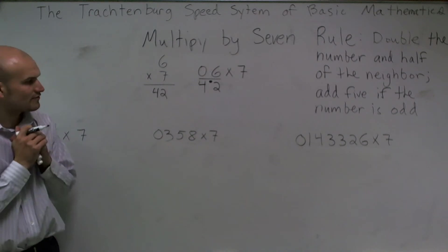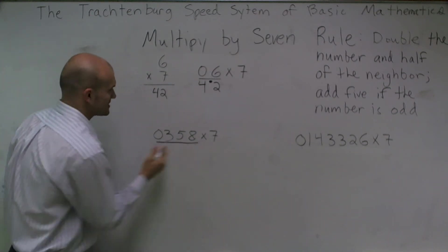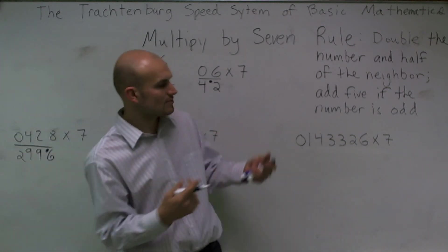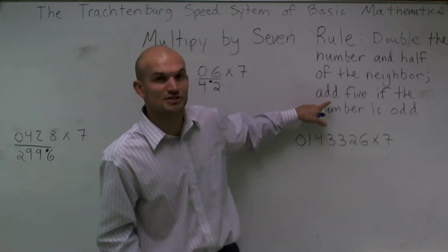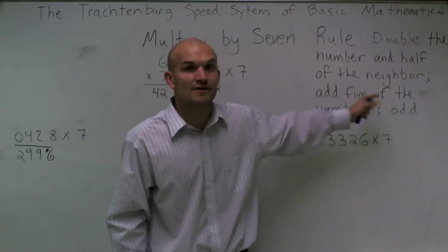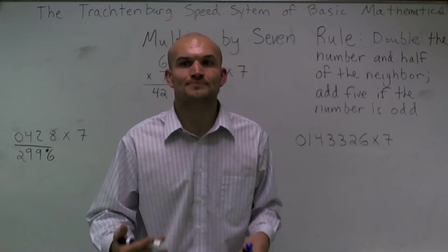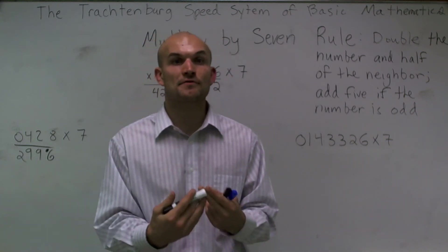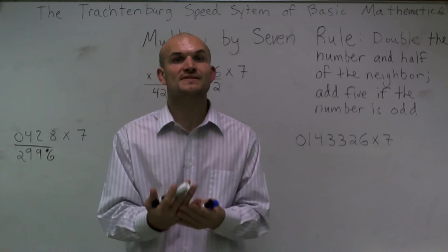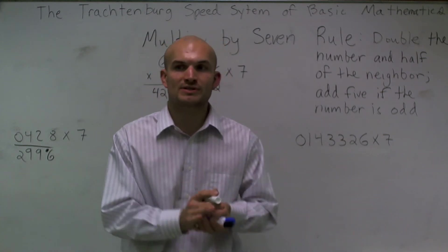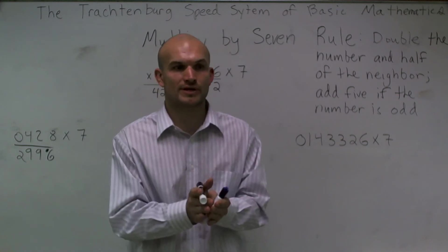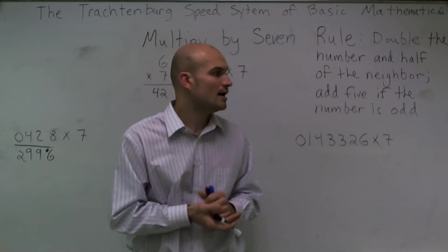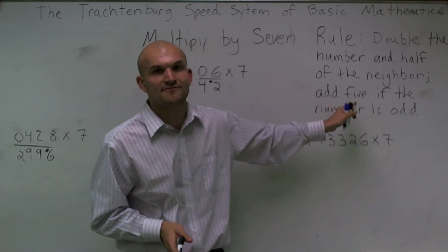Now let's look at 358 times 7. This problem is going to be a little more difficult because we're dealing with some odd numbers. There's a special rule for odd numbers: we have to add 5 when the number is odd. It's also important to mention that when we're taking half of an odd number, we want to round down. So half of 3 is 1, and half of 7 is 3. Instead of saying 3.5, we round it down to 3. We do this for speed, and we counterbalance it by adding the 5 in the Trattenburg system.